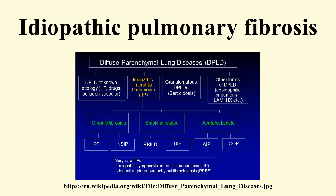Idiopathic pulmonary fibrosis belongs to a large group of more than 200 lung diseases known as interstitial lung diseases, characterized by involvement of the lung interstitium — the tissue between the air sacs of the lung. IPF is one specific presentation of idiopathic interstitial pneumonia, which is in turn a type of ILD, also known as diffuse parenchymal lung disease.